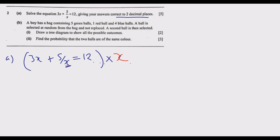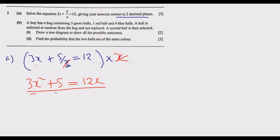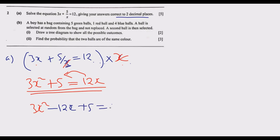Multiplying everything by x, we get 3x squared because x times x is x squared. The x's cancel on the middle term leaving 5, and x times 12 gives 12x. So now it's clear this is a quadratic equation. Rearranging, we get 3x squared minus 12x plus 5 equals 0, because 12x crosses the equal sign and becomes negative.